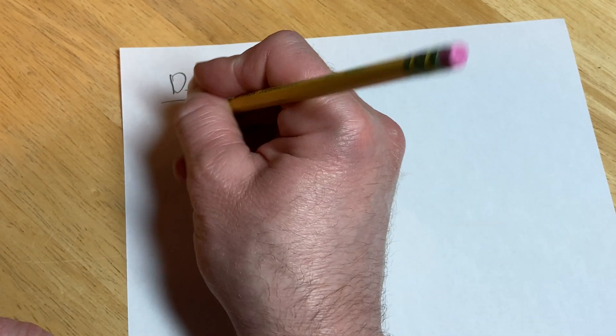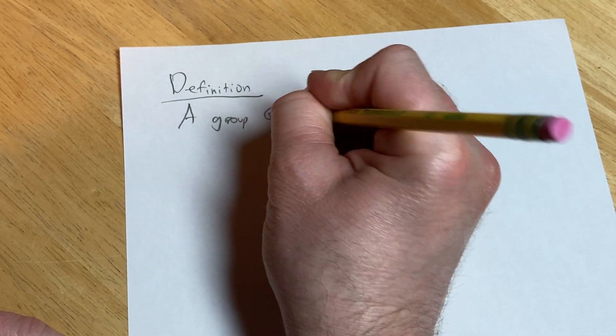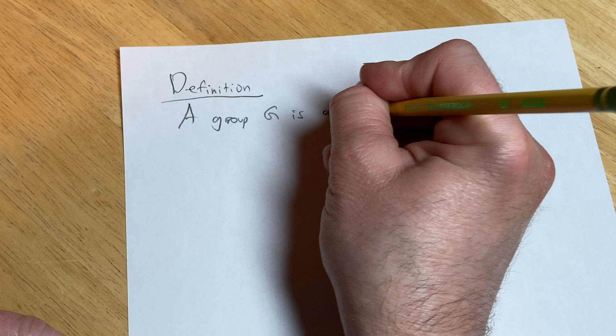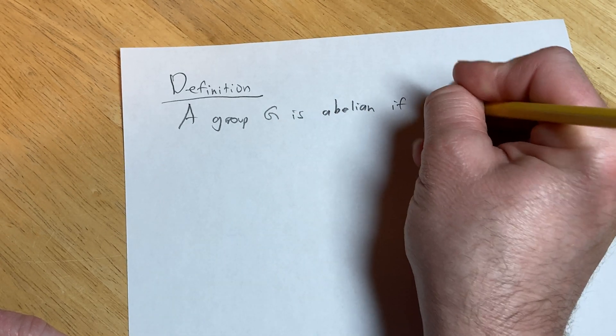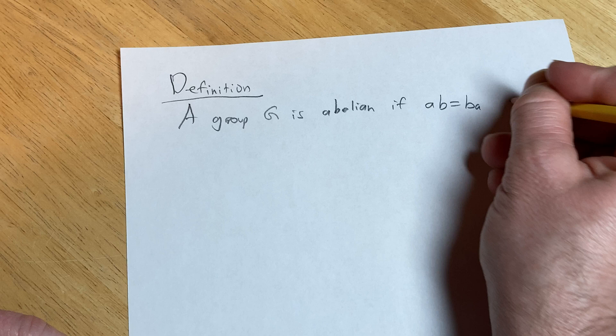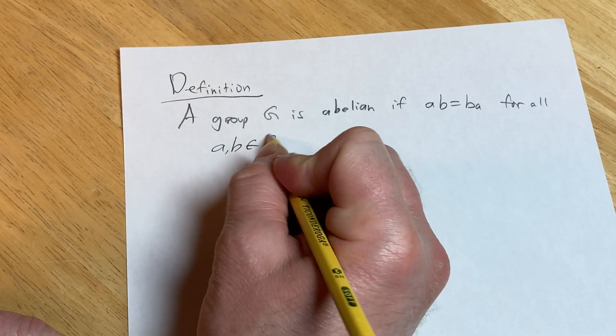We'll say a group G is abelian if a times b equals b times a for all a, b in G.